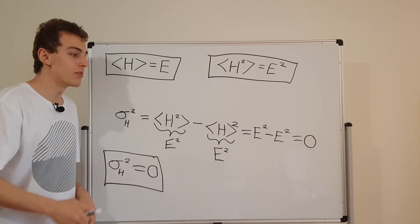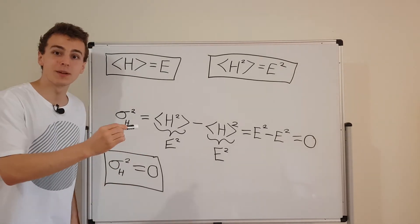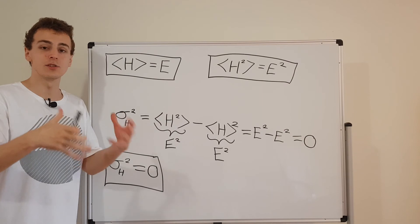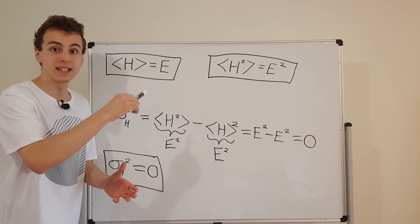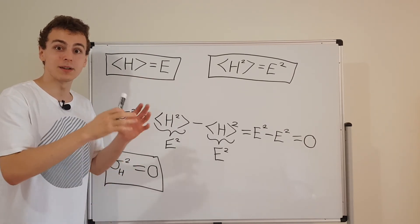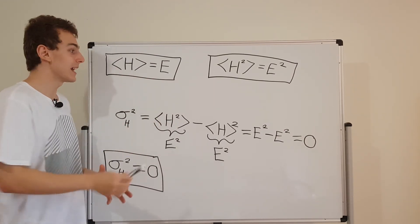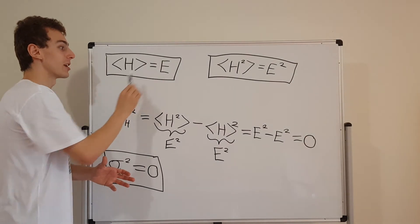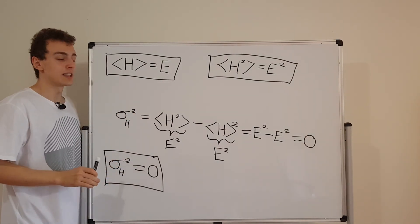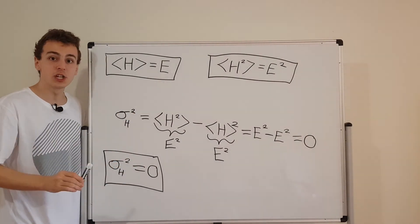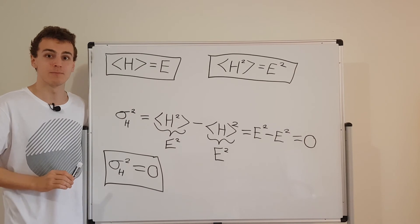And that is the value that goes up in the exponential factor that comes into the time dependence. So that value that sits up there in the exponential factor is E — the same E we've been using — and that energy tells you the energy of the state of definite energy.